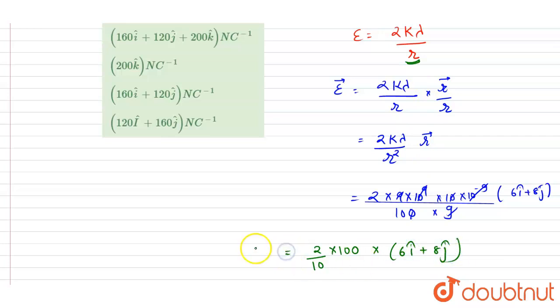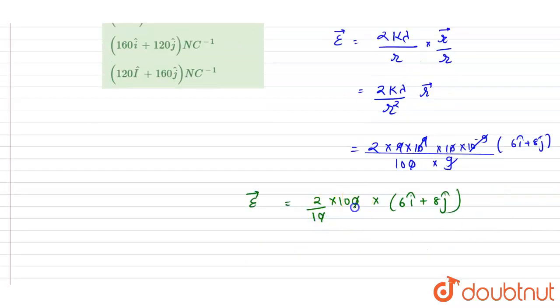This will be the electric field vector. Now if you see, this will get cancelled out and you will get 120î + 160ĵ as the electric field vector, and this is the answer of this question.